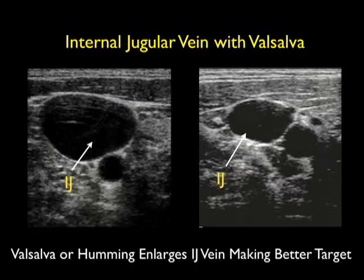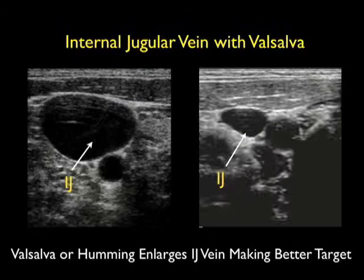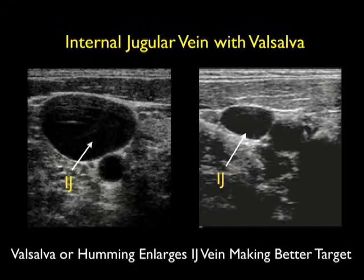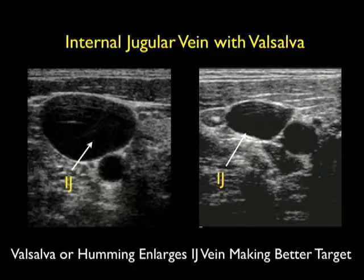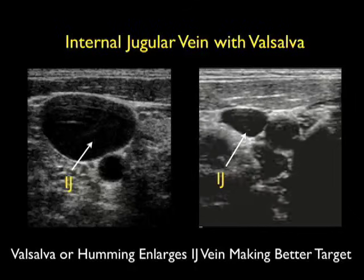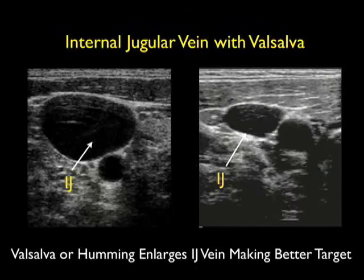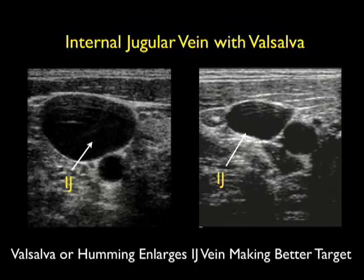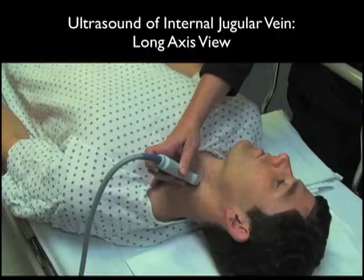In the image to the right, note the relatively small caliber of the internal jugular vein — it's almost as big as the carotid artery — but it becomes much more distended as the patient bears down. Using the Valsalva technique can make it a much better target for placement of the large cannulation needle.